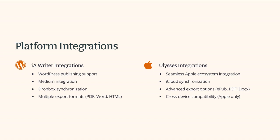IA Writer integrates with a variety of platforms including WordPress, Medium, and Dropbox. It also has good export options, allowing you to save documents as PDF, Word, HTML, and more. Ulysses also offers strong integration with various platforms and has an excellent export feature, supporting formats like EPUB, PDF, and Docs. Additionally, it integrates well with Apple's ecosystem, syncing seamlessly across devices via iCloud.